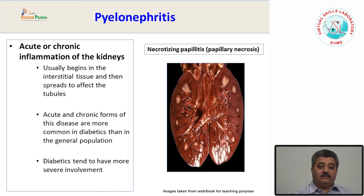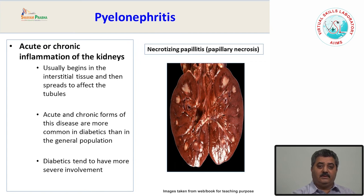Diabetic patients are more prone to infections, especially pyelonephritis, because many of the protective mechanisms — including polymorphs, macrophages, migration, and release of chemokines — are defective in these patients, ultimately leading to increased chances of infection.